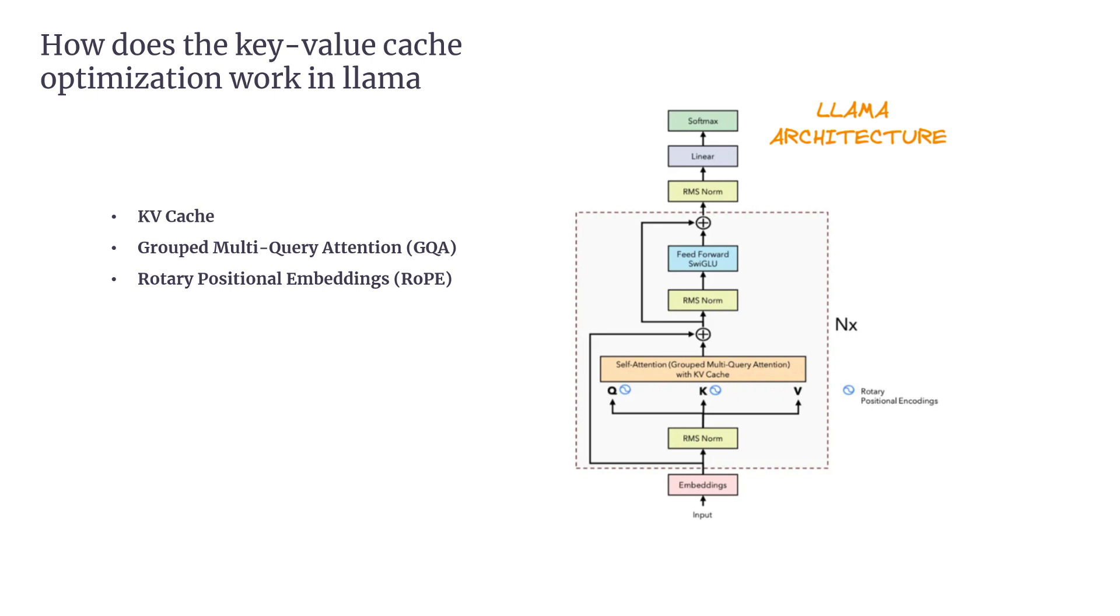In summary, the KV Cache is a powerful optimization that significantly improves the speed and efficiency of text generation in LLAMA models. By storing and reusing key and value vectors from previous tokens, LLAMA reduces redundant calculations, making inference much faster, especially for long sequences. While the cache does consume some memory, its advantages in terms of reduced computation and faster token generation make it an essential part of LLAMA's design. With additional optimizations like grouped multi-query attention and rotary positional embeddings, LLAMA is able to balance both performance and efficiency very effectively.